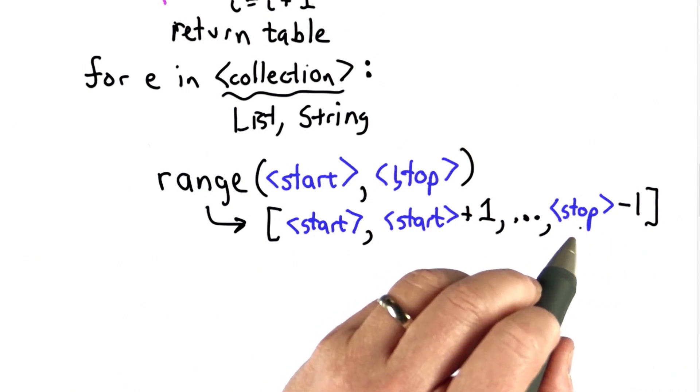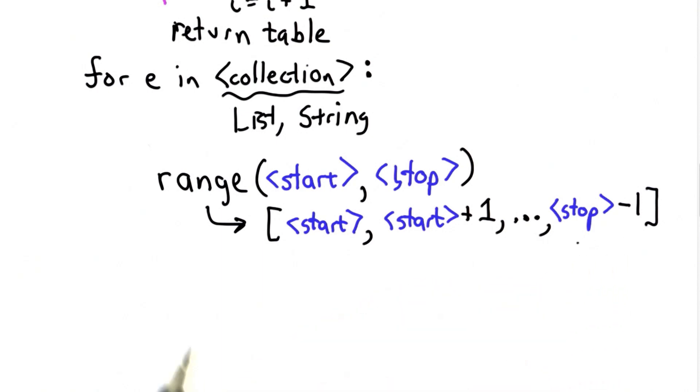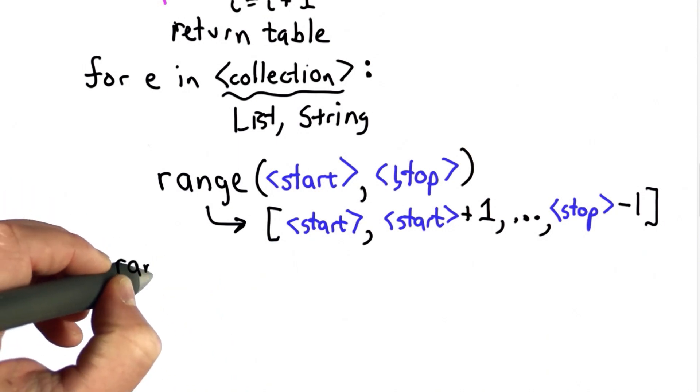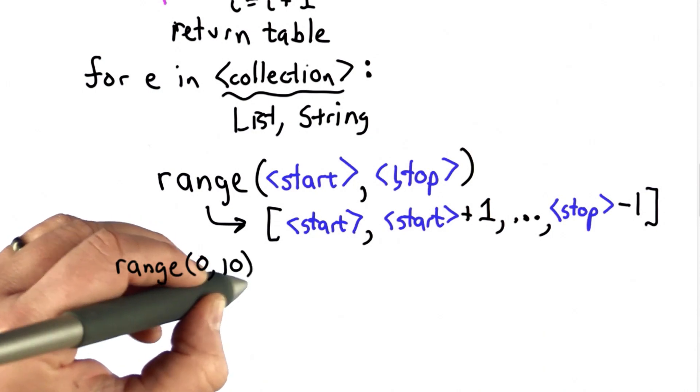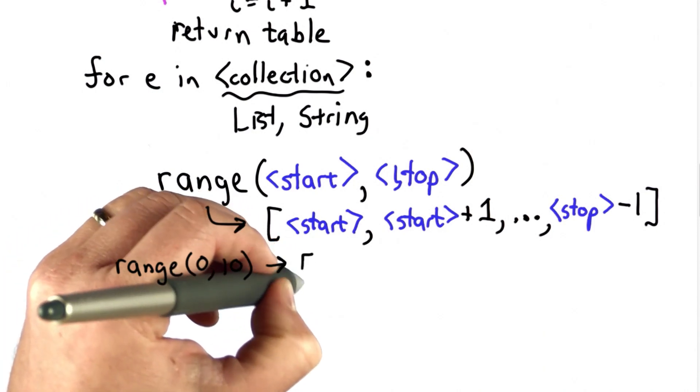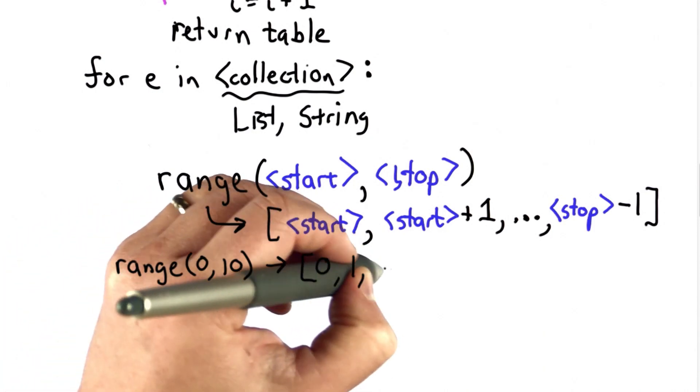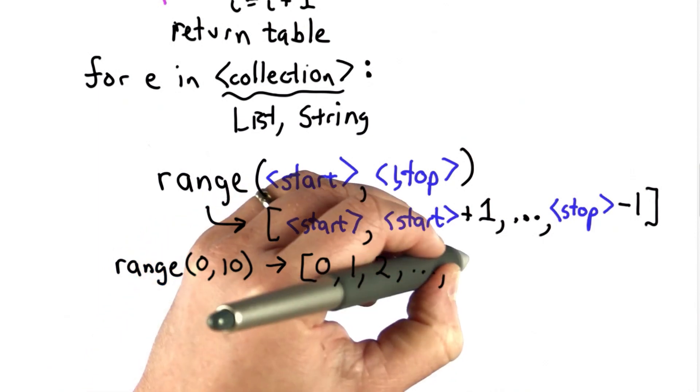You'll note that it doesn't include the value passed in as the second parameter in the list. This turns out to be useful because oftentimes when we loop through elements, we don't want to include the last element. So that means if we evaluated something like range 0 comma 10, the result would be the list 0, 1, 2, up to 9.